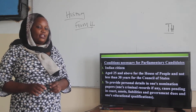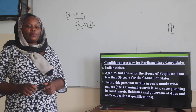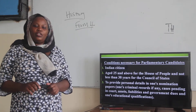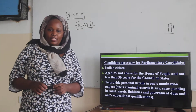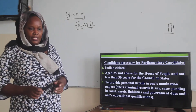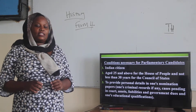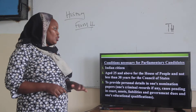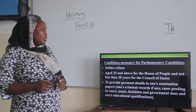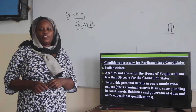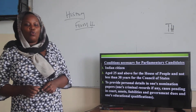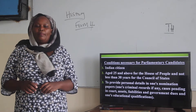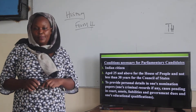The third condition is that you must provide personal details in your nomination papers, declaring that you do not have any criminal record, and disclosing any cases pending in court, your assets, liabilities, government dues, and educational qualifications — all of these must be submitted with your nomination papers. If you meet all the qualifications, you qualify to be elected as a member of parliament or a member of the Council of States.